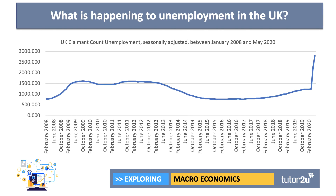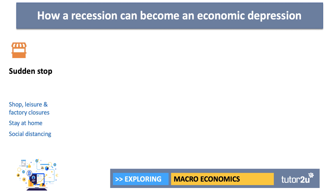There has been a very steep increase in claimant count unemployment — the number of people eligible to claim the Job Seeker's Allowance — which has jumped by more than a million in the last few months. Clearly there are significant fears that what is undoubtedly a recession could become something worse, and that mass unemployment might return to the UK.